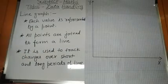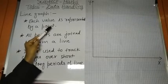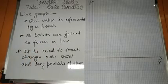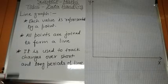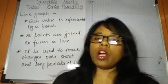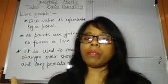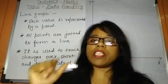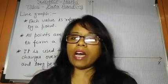In line graph, each value is represented by a point. All points are joined to form a line. Line graph is used to track changes over short and long periods of time. If you want to keep record of changes for a short period or long period, then you have to make a line graph.